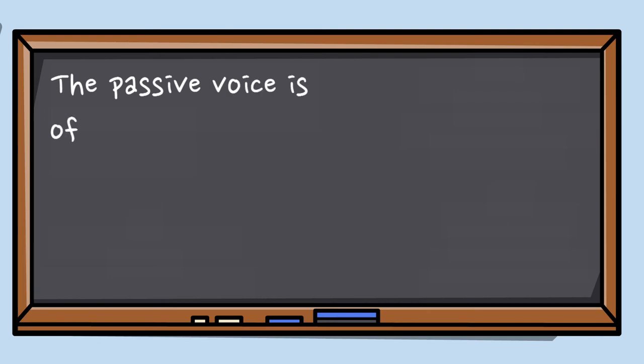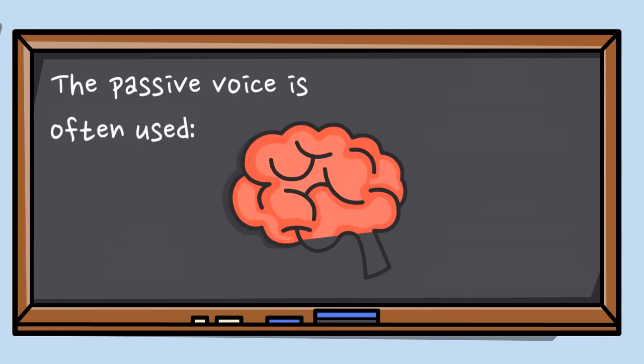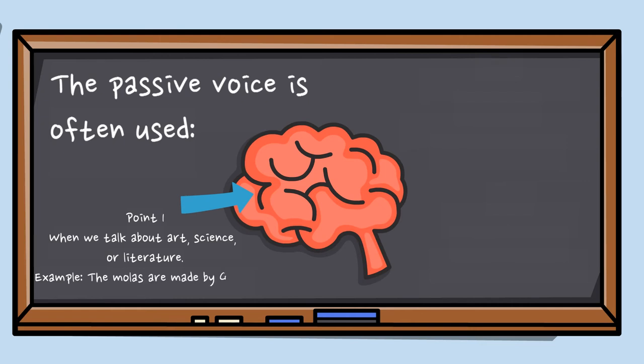There are times when the passive voice does a better job of presenting an idea, especially in certain formal, professional, and legal discussions. So it is often used when we talk about art, science, and literature. For example, the molas are made by gunas.